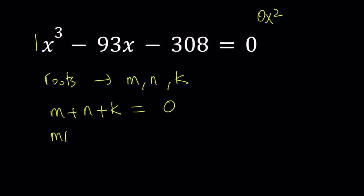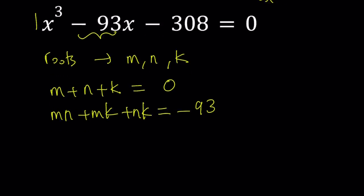What about the two ways? mn, mk, and nk. That is c over a. c is negative 93, so it's going to be negative 93. Simple, right? Very easy.